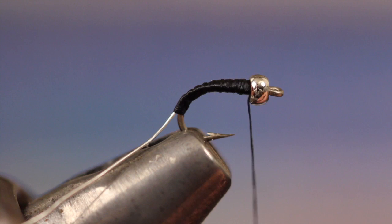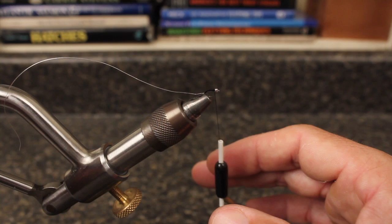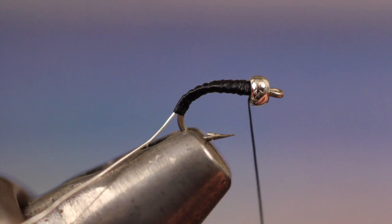Once there, spin your bobbin counterclockwise. What this does is relax the twist in the thread and flatten it out. I think you can actually see it getting wider and flatter in this shot. Now, again, begin wrapping the thread rearward.